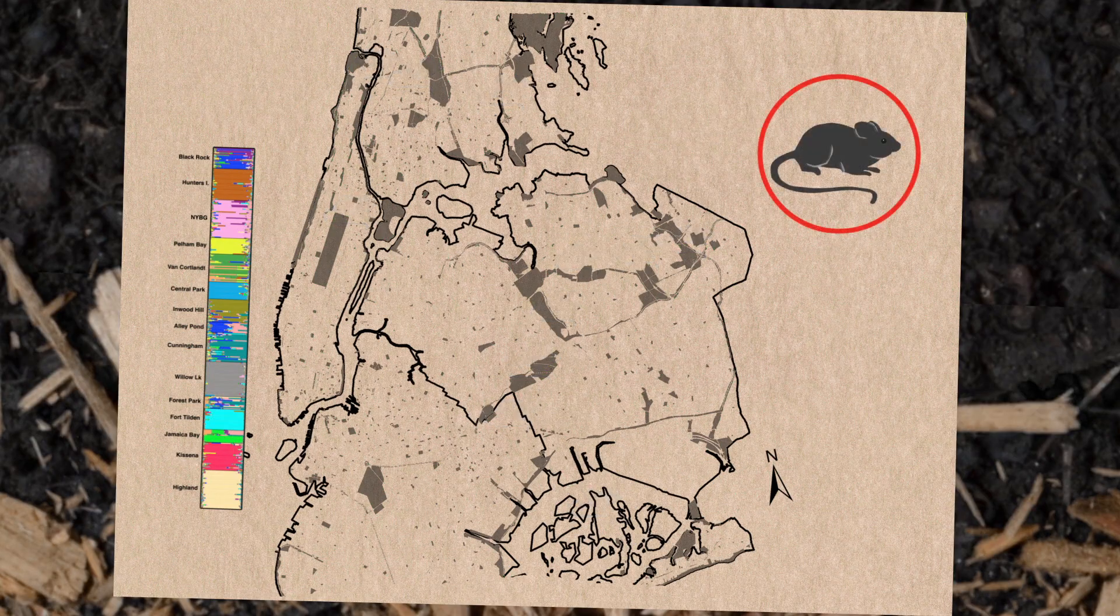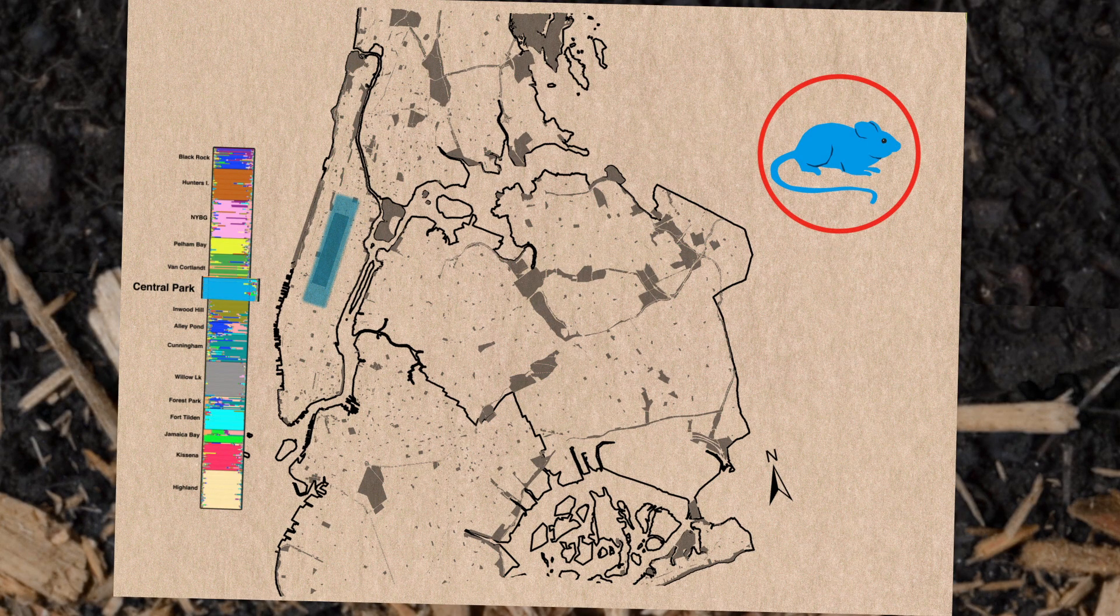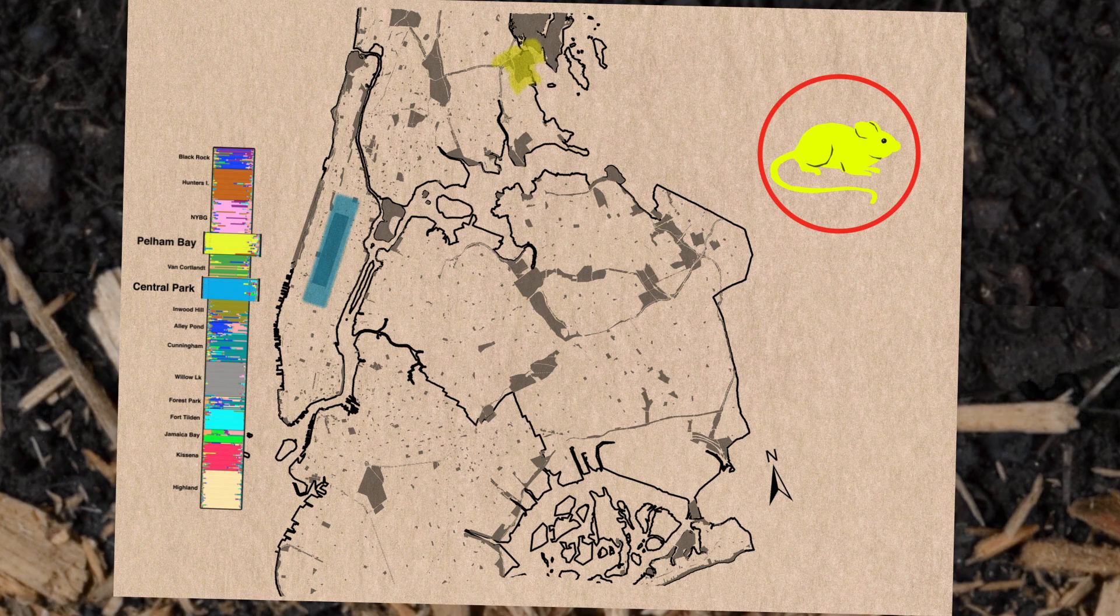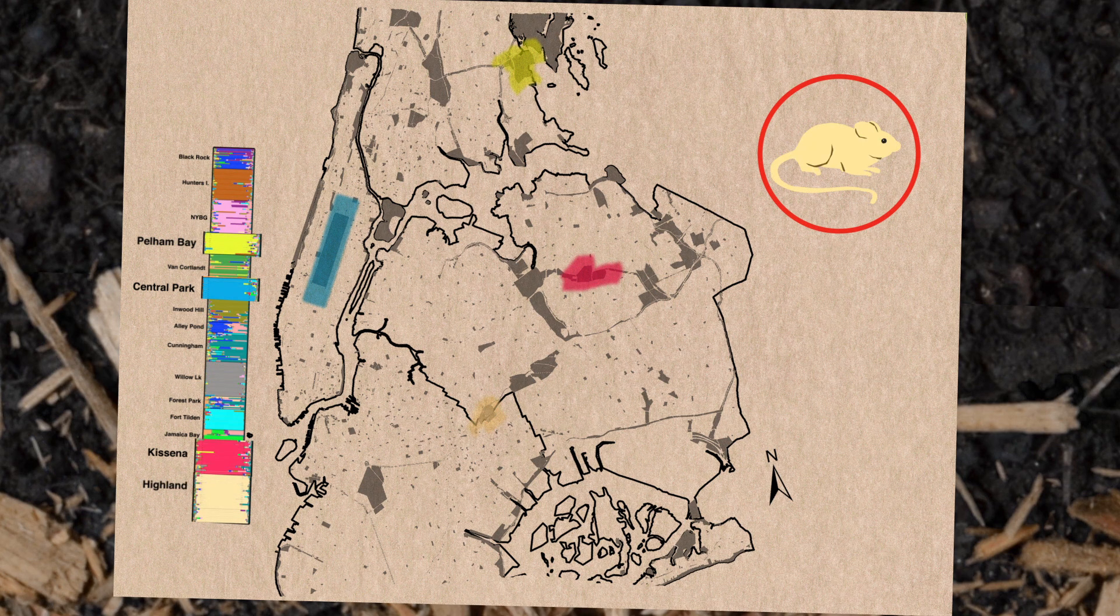Just using 18 short segments of DNA, we can pretty much take a mouse, somebody could give us a mouse, not tell us where it was from, and we could determine what park it came from. That's how different they've become.